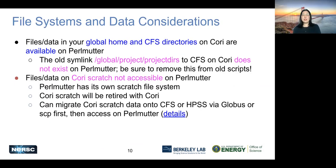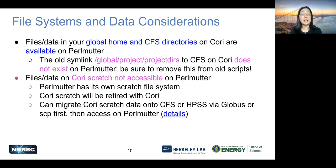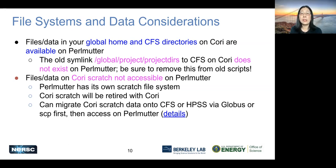I'd like to also mention the file system and data considerations. Your data on Cori in your global home or community file system directories are available on Perlmutter, so you don't need to do anything special for them. However, there is one special thing to note: we have a symlink called global project that you've been using on Cori, and we made a file system upgrade to the community file system (CFS). So the new file system is already CFS, and that global projects path is actually a symlink to CFS on Cori. We will not be migrating that symlink to Perlmutter. On Perlmutter, you should use the direct link of CFS, which is /global/cfs/cdirs.